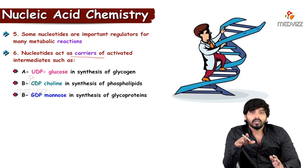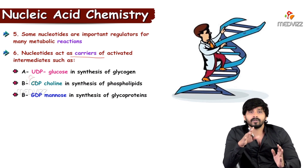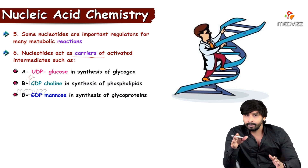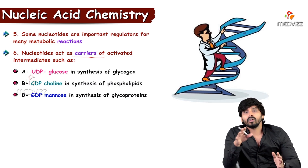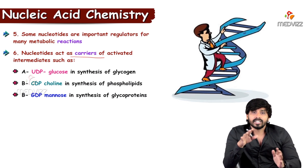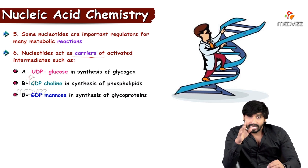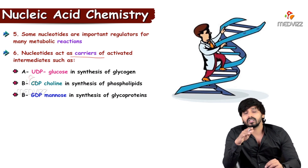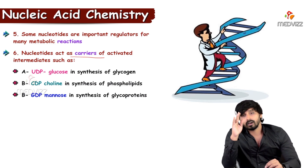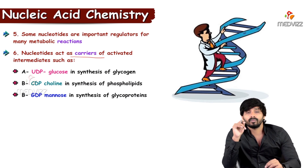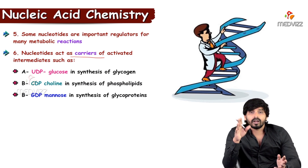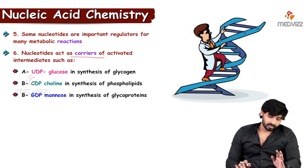Similarly, CDP-choline — cytidine diphosphate choline, formed by CTP accepting choline — is involved in glycerophospholipid synthesis. GDP-mannose is mainly used for glycoproteins, which are found on top of the cell membrane for cell-to-cell recognition and receptor function.